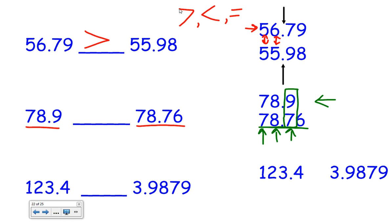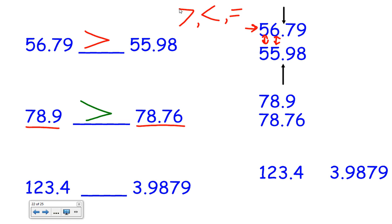This bottom number has more digits; the top number has a larger digit. If you guessed the top number, you are correct — seventy-eight and nine-tenths is greater than seventy-eight and seventy-six hundredths. What we can do to make this easier: once you have the decimals in both numbers lined up, you can actually put a zero in here without changing the value. Now we can see it has the same number of place values, and we still work from left to right just as if they were two regular numbers.